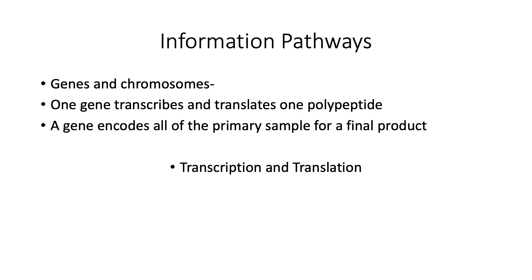First we'll discuss the information pathways. These consist of genes and chromosomes. A gene transcribes and translates one polypeptide, and a gene encodes all of the primary sample for a final product.